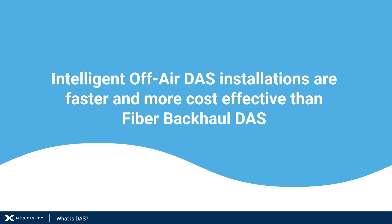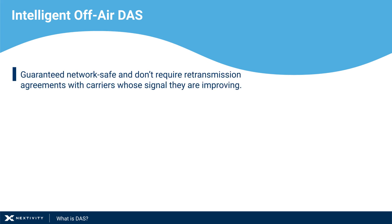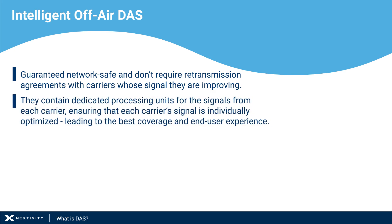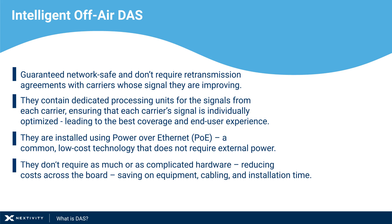Intelligent off-air DAS installations are faster and more cost effective than fiber backhaul DAS because they are guaranteed network safe and don't require retransmission agreements with carriers. They contain dedicated processing units for the signals from each carrier, ensuring each carrier signal is individually optimized, leading to the best coverage and end-user experience. They are installed using Power Over Ethernet (POE), a common low-cost technology that does not require external power.